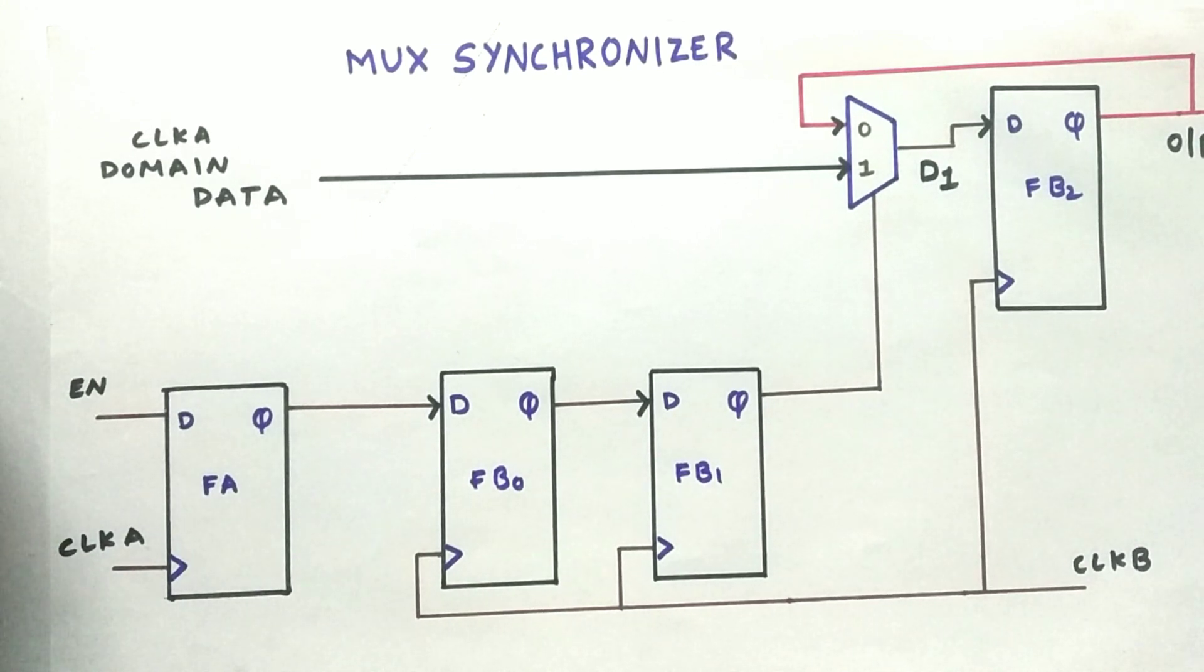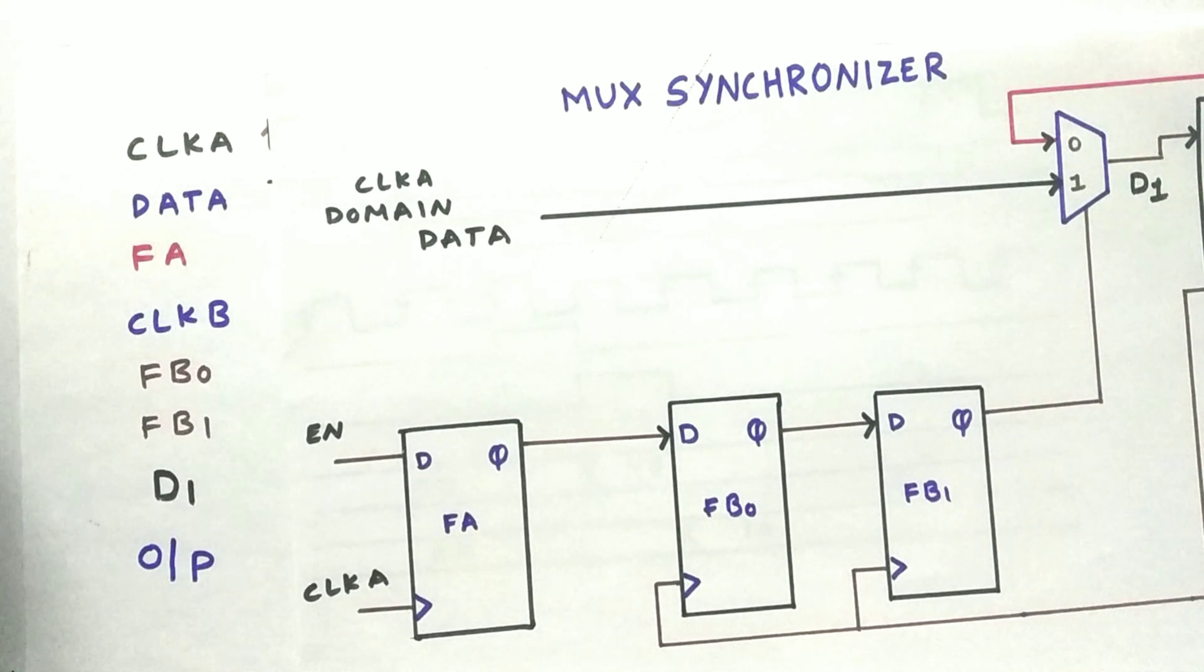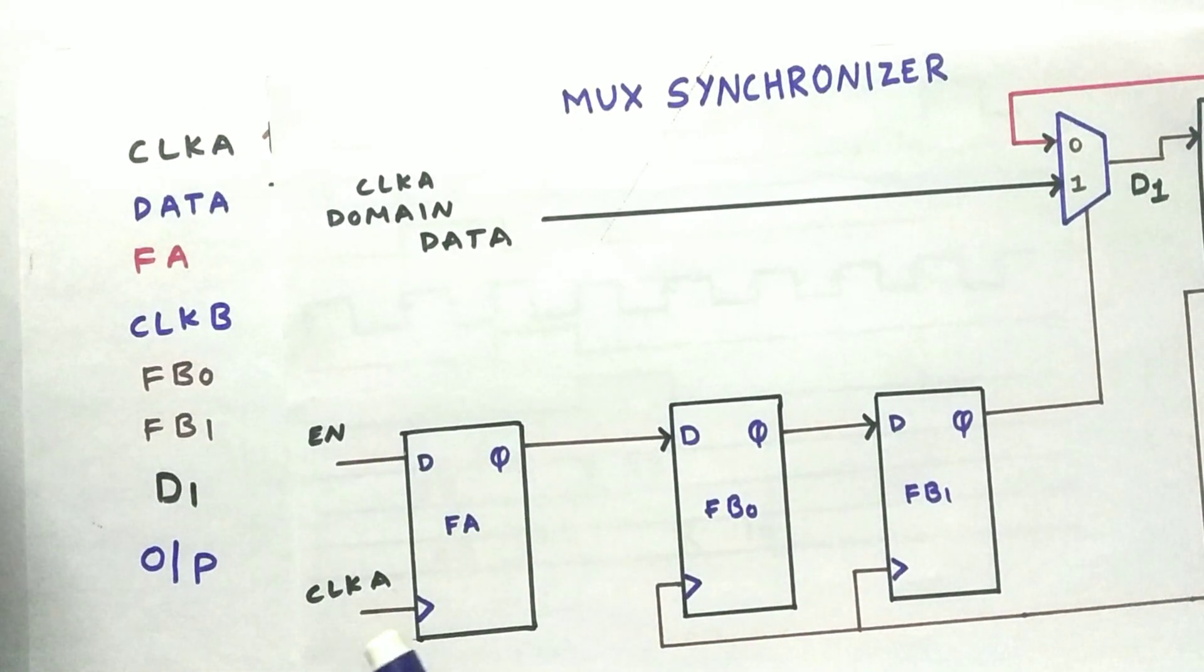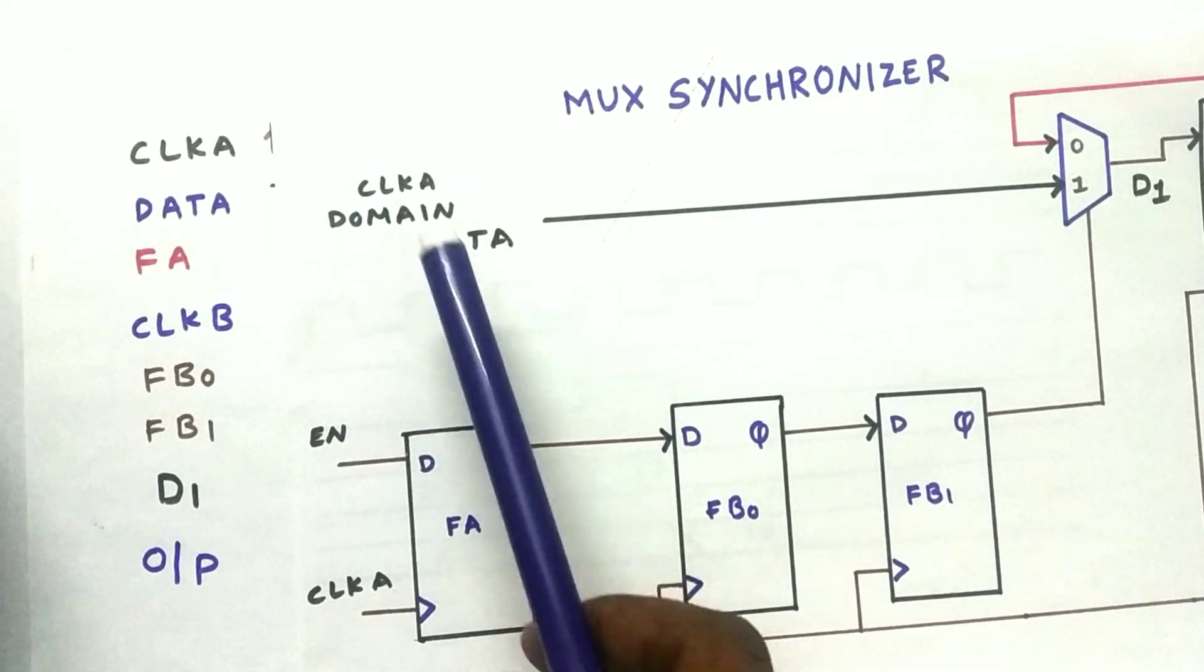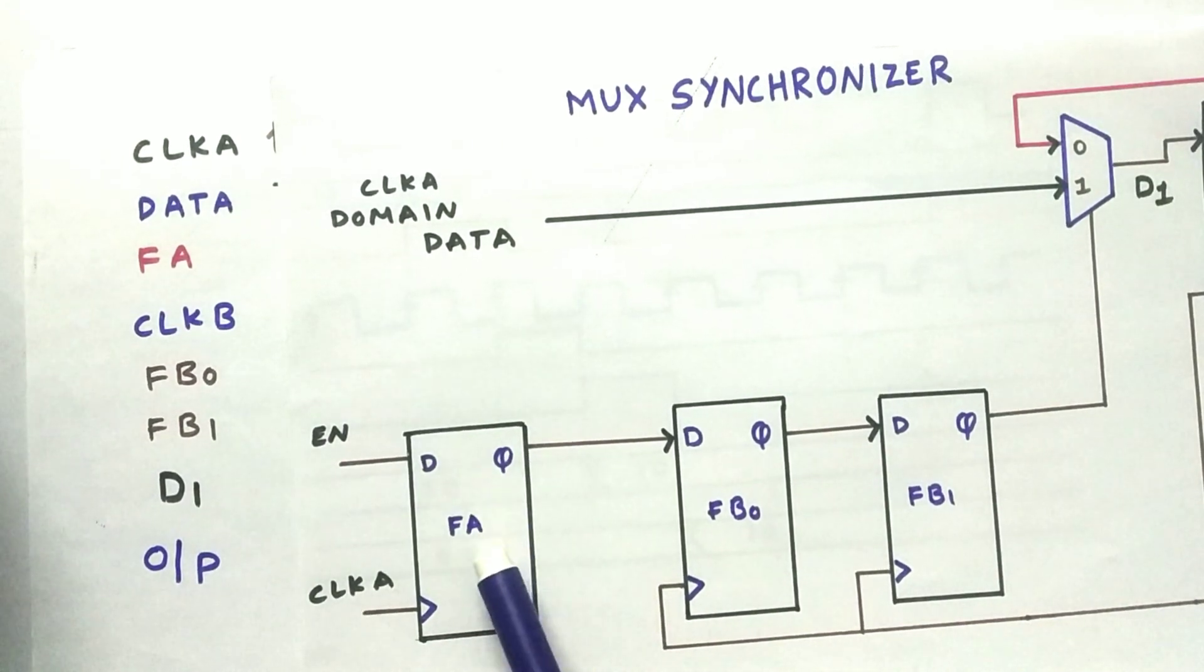Now let us look at the timing diagrams for better understanding. In timing diagrams, we will see the following signals. Clock A is the source clock. Data is the input data, which we are supplying from clock A domain.